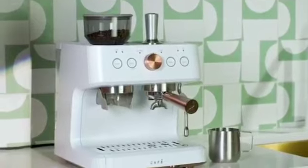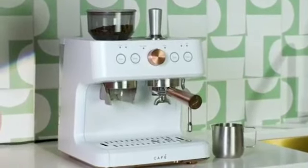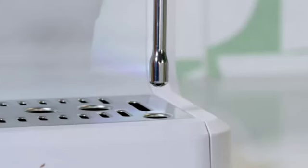After every steam cycle, your machine will automatically release internal pressure by slowly pumping excess water and steam into the drip tray. Steam coming out of the drip tray is normal during this process. Do not remove the drip tray until the process is complete.